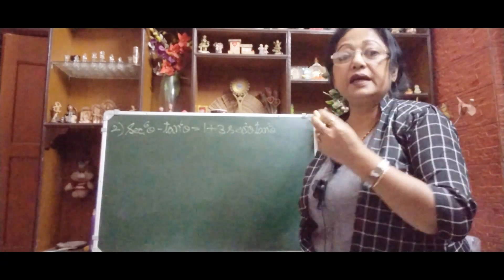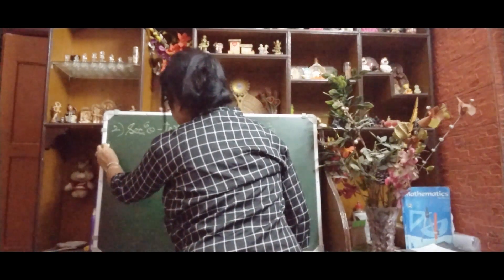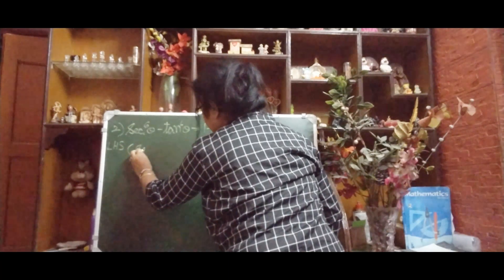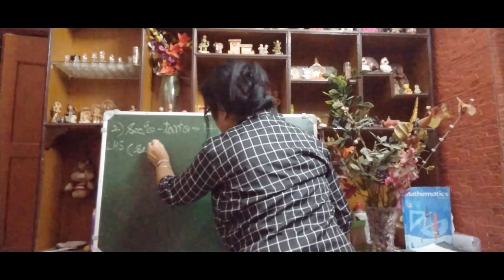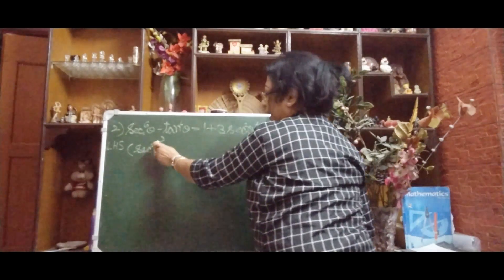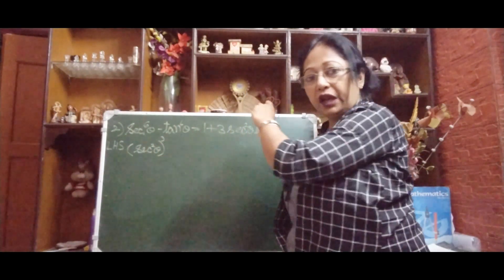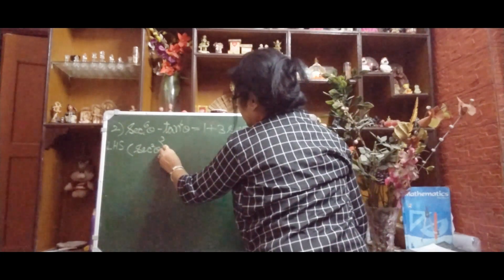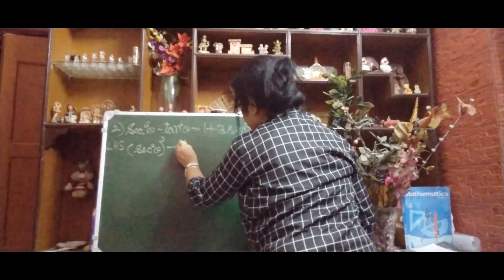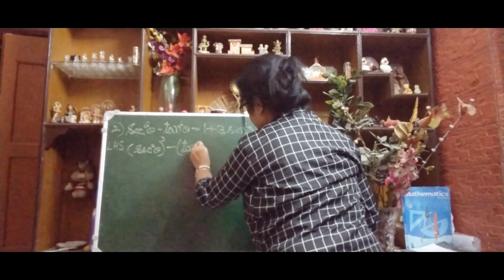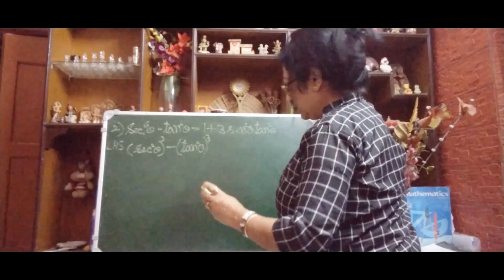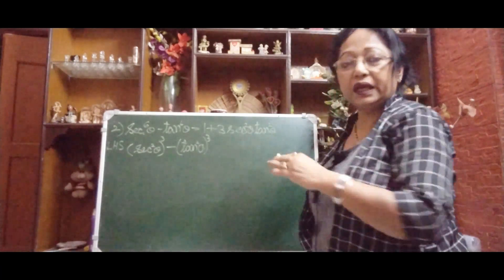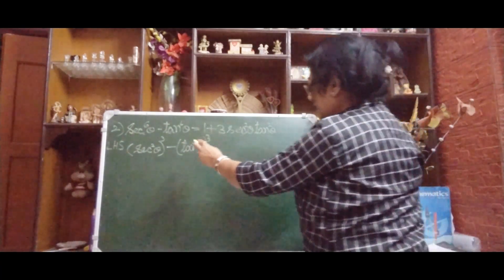The question is: the power is 6 — how do you break it? I told you how to break power 4 in the last video. Now for power 6, always break it this way: (sin²θ)³ − (tan²θ)³. The 2 comes inside and the 3 goes outside as the cube. Do not do it the opposite way.